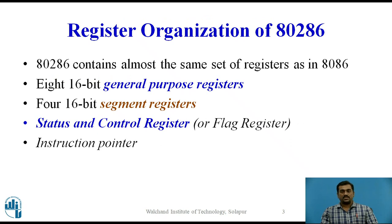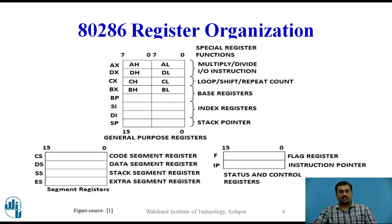The 80286 contains almost the same set of registers as in the 8086 microprocessor. There are 8 16-bit general purpose registers, 4 16-bit segment registers, one flag register which is also called the status and control register, and one 16-bit instruction pointer register. As shown in the diagram, the available registers are divided into 3 groups: general purpose registers, segment registers, and status and control registers.